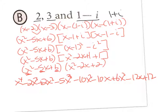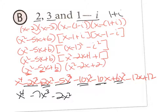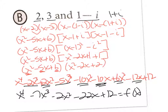Combining like terms: x⁴ is alone; x³ terms: −2x³ − 5x³ = −7x³; x² terms: 2 − 10 + 6 = −2x²; x terms: −10x − 12x = −22x; constant: +12. Final answer: f(x) = x⁴ − 7x³ − 2x² − 22x + 12. Not extremely hard math-wise — the hardest part is being careful and not making mistakes. We'll work on these in class tomorrow.